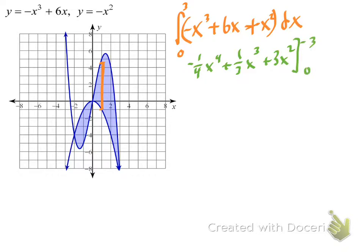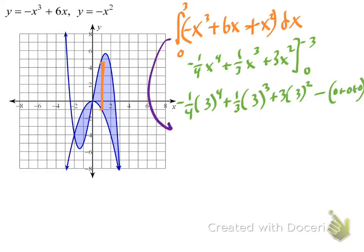Plugging in the bounds from 0 to 3. I could go through all that arithmetic, but I'll just use the numerical integration feature. That gives 15.75.